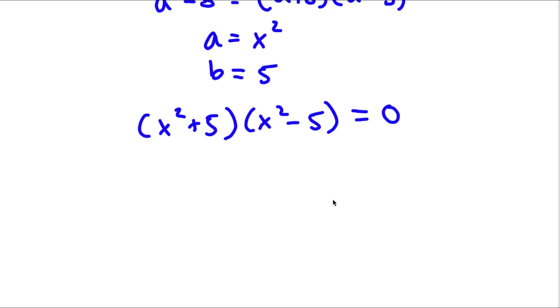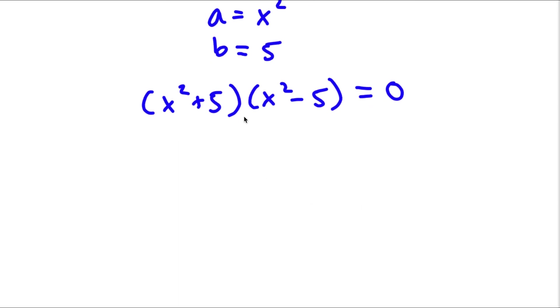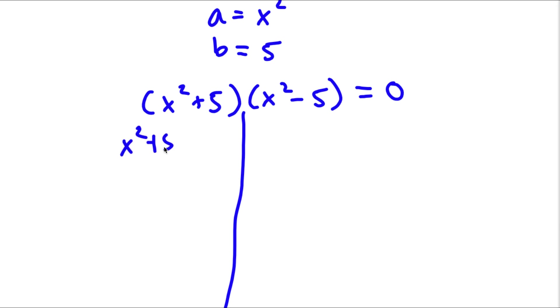So now I will have x squared plus 5 times x squared minus 5 is equal to 0. This gives me two equations: x squared plus 5 is equal to 0, and x squared minus 5 is equal to 0.